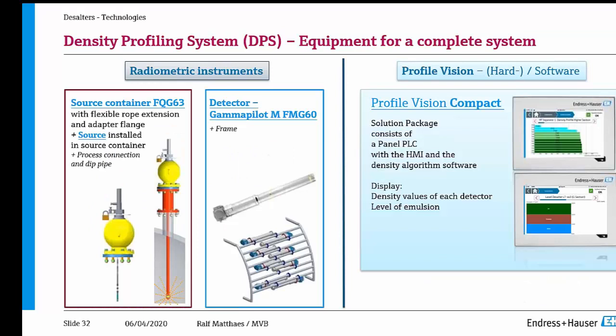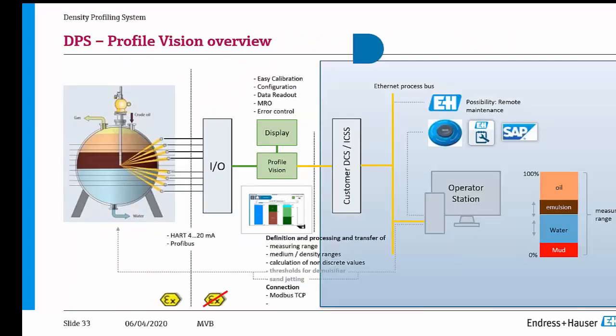The entire installation consists of a source container with its source, detectors mounted on a frame. This source activity is designed following ALARA — As Low As Reasonably Achievable. The frame can be mounted directly attached to the separator or separately. There's a small PLC with an HMI for visualization. The signal is passed to the control room via TCP/IP where you have exactly the same information as in the field.